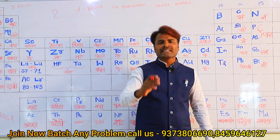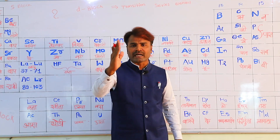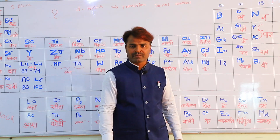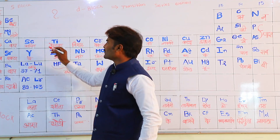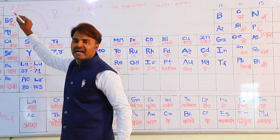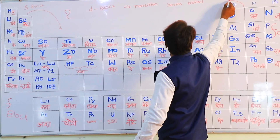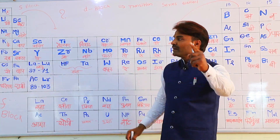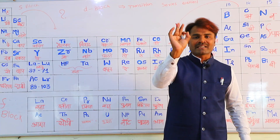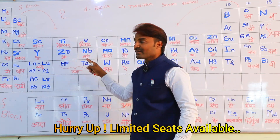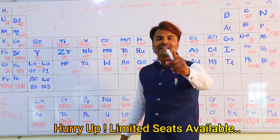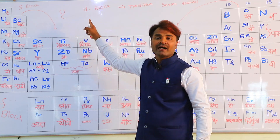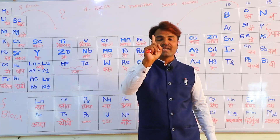We are discussing the modern periodic table. The modern periodic table is totally based on physical and chemical properties. Some properties of S-block and some properties of P-block are merged in the D-block. That's what D-block elements are called — transition series elements.